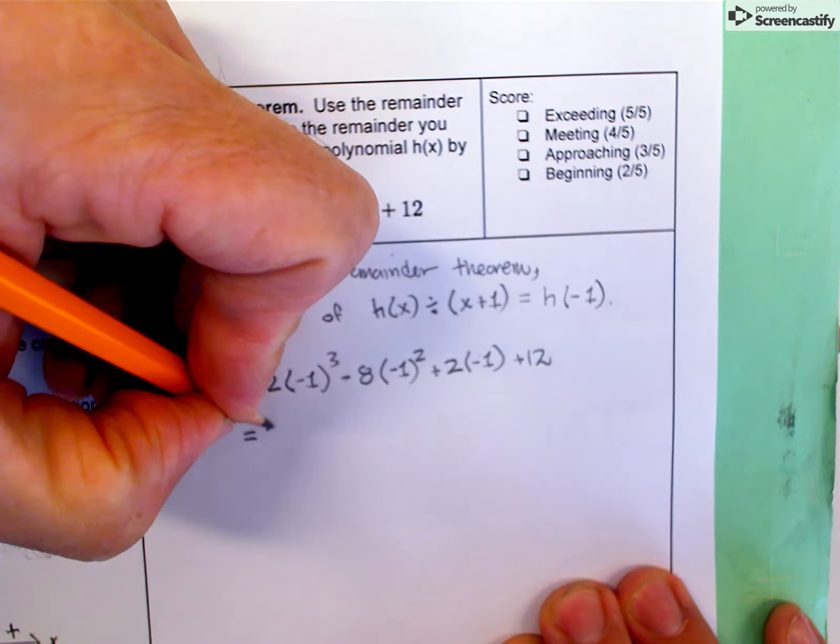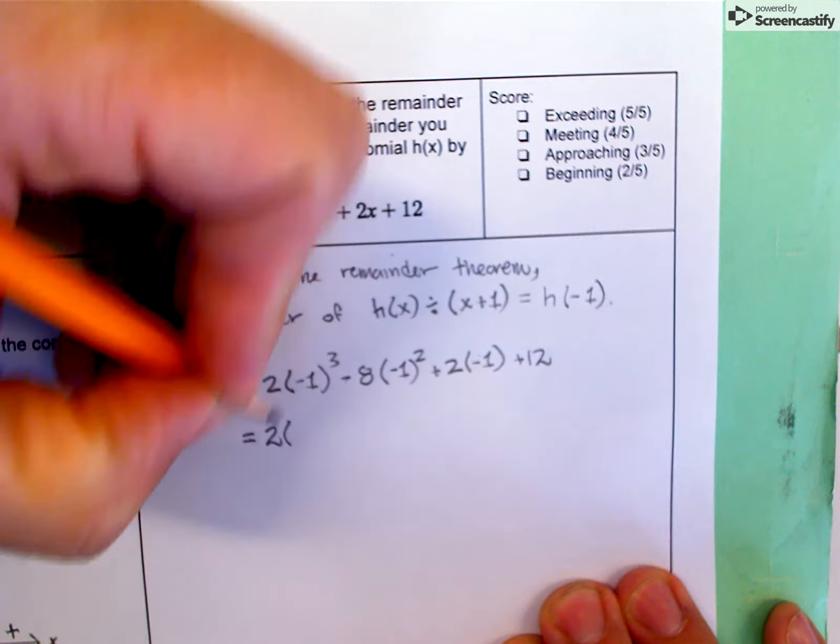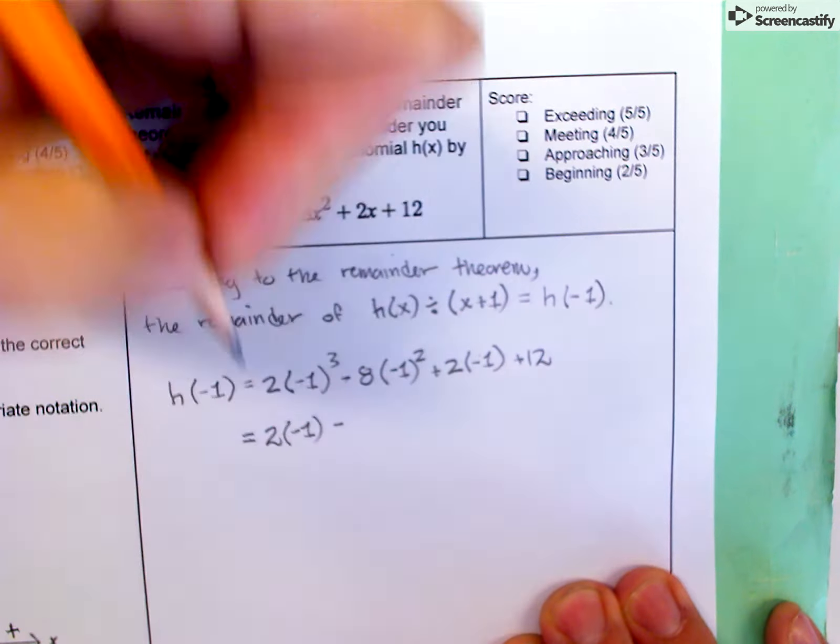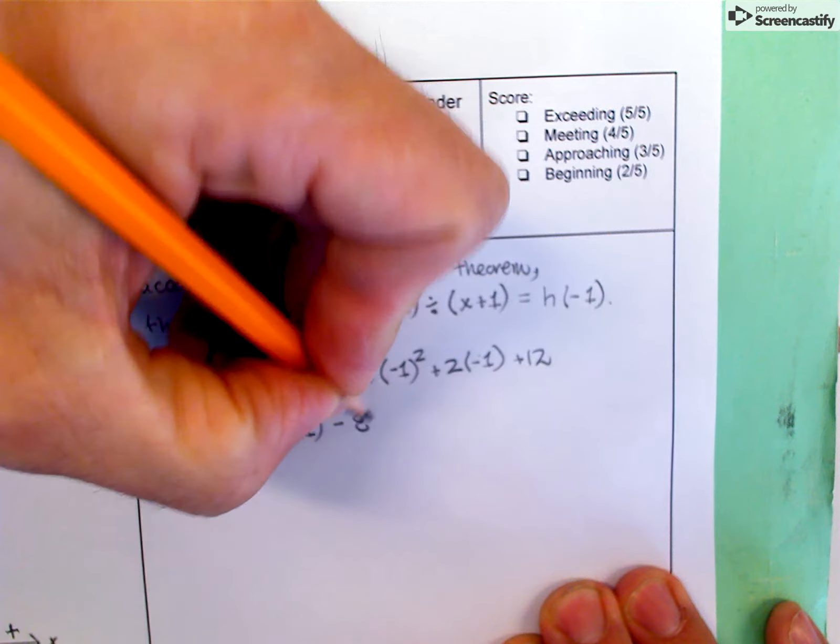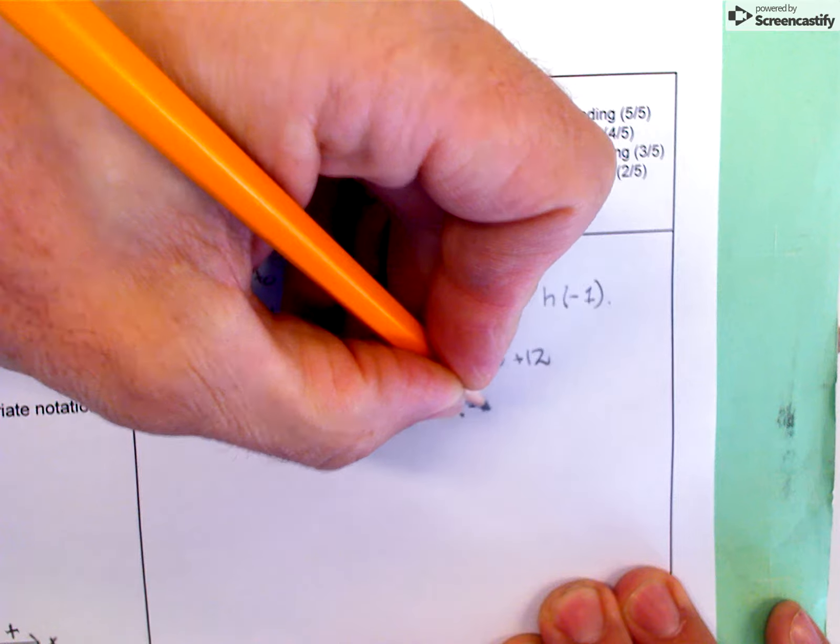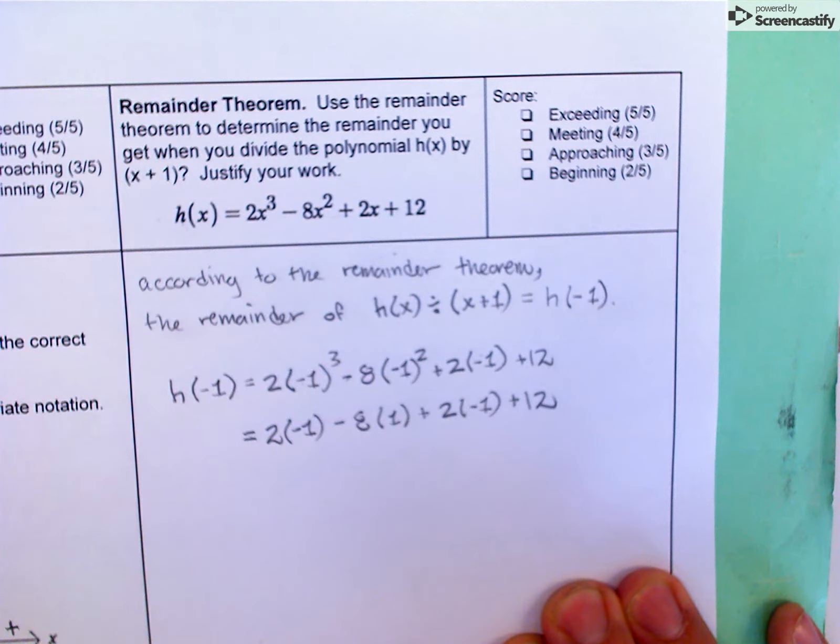I do have a couple of exponents here. Negative 1 to the third power is negative 1, and negative 1 to the second power is 1. So I'm rewriting my expression in a simpler form. Now there are no more exponents.